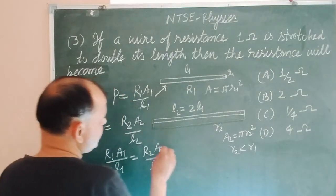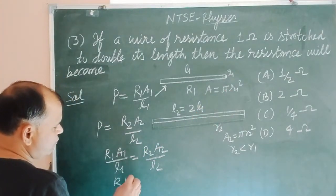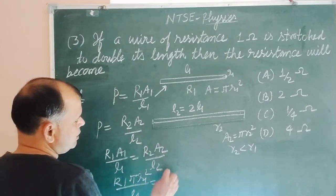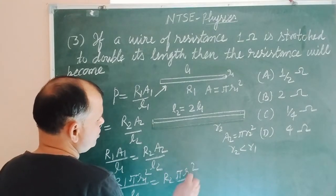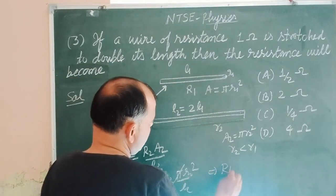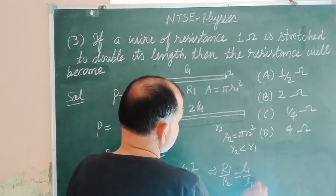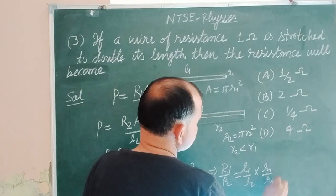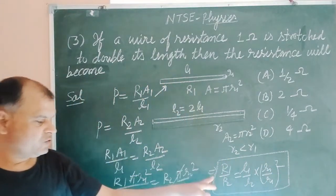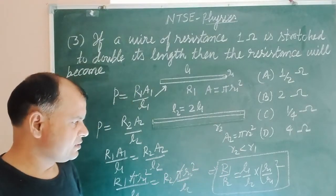Here A1 is pi R1 squared and A2 is pi R2 squared. So substituting: R1 times pi R1 squared over L1 equals R2 times pi R2 squared over L2. Cancelling pi, we get R1 over R2 equal to L1 over L2 multiplied by R2 squared over R1 squared. This is the ratio between resistance in the first and second conditions.